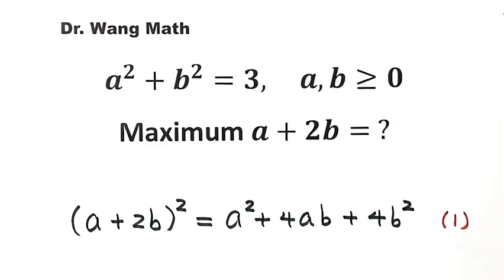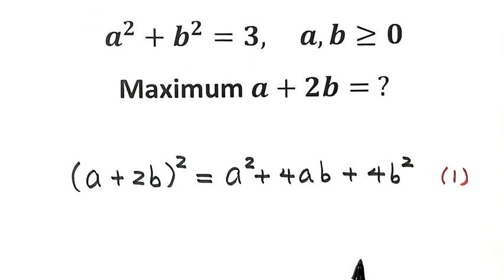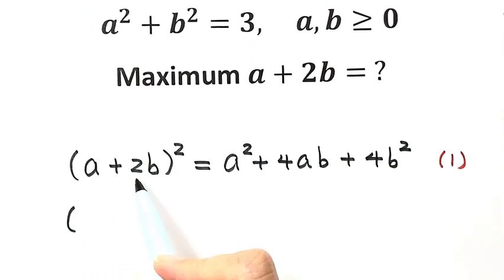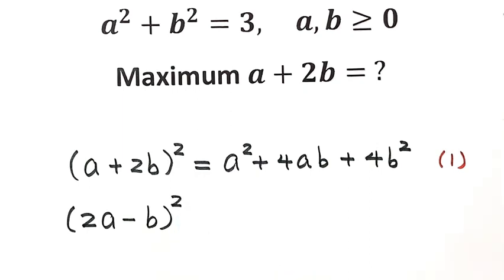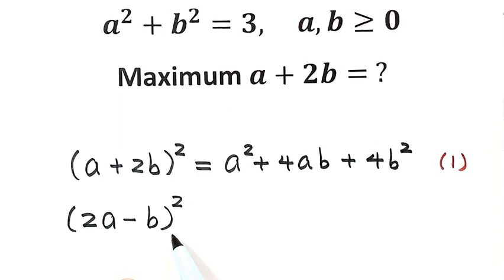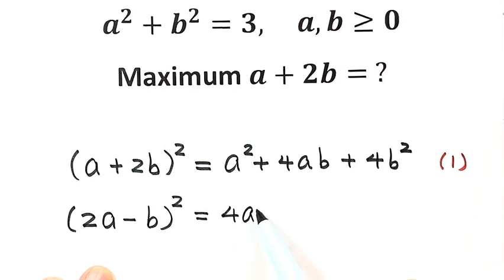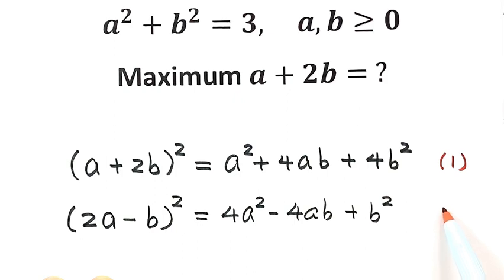Now comes a very important and useful trick. We construct the expression 2a minus b and square both sides, giving us 4a squared minus 4ab plus b squared. Let's label this Result 2. You'll see in a moment why we do this.